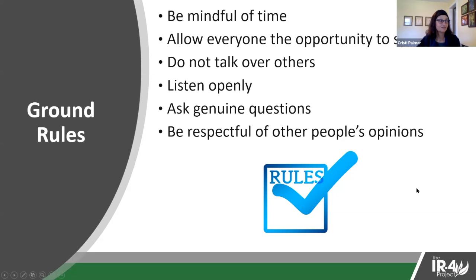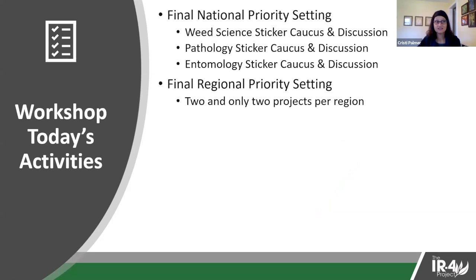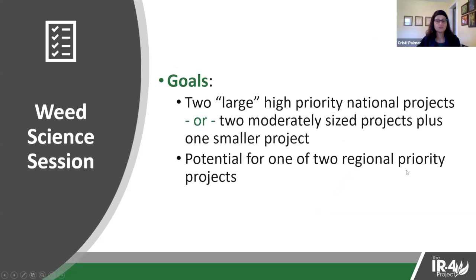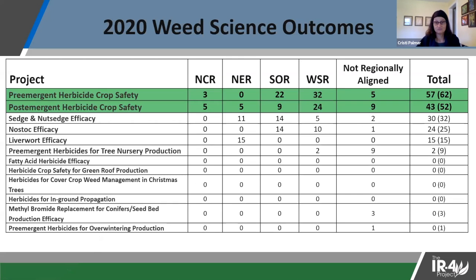Thanks, Maddie. So what we're going to be doing today is the final national priority and final regional priority setting. I'm going to start with weed science. We've got goals for each of the disciplines. For weed science, two large high-priority national projects, or two slightly smaller projects, or two moderately sized projects plus one smaller project. In addition, potential for one of the two regional priorities in your region. These are the weed science outcomes from the virtual sticker caucus last evening.